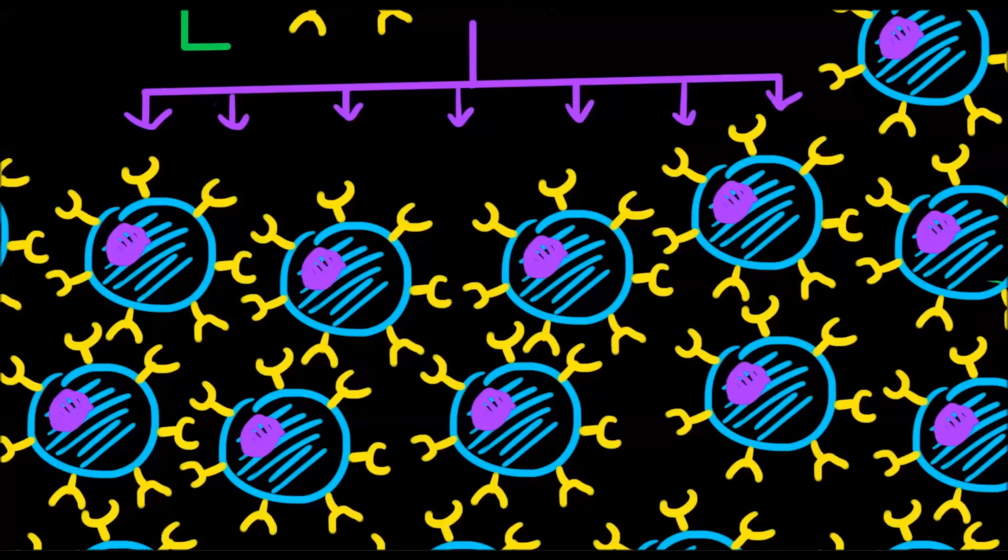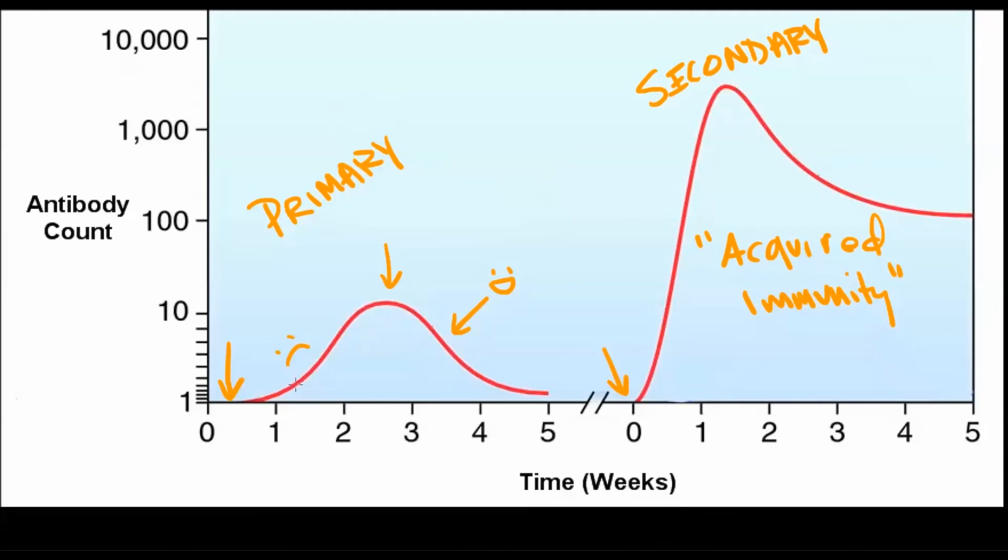So let's return to the graph. Here in the first exposure, it takes a long time for the right clones to be selected, and then for those clones to reproduce and mature into an effective fighting force. You may get better, but it takes a while, and you will exhibit disease symptoms. By here, the infection has been cleared. Most of the immune cells have self-destructed, but the memory cells persist.